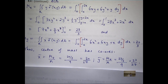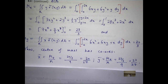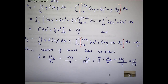With the first moments calculated, the last step is to find the center of mass of the plate. We take the moments and divide them by the mass, and these give us the coordinates (x-bar, y-bar) of the center of mass point.